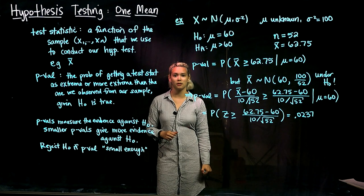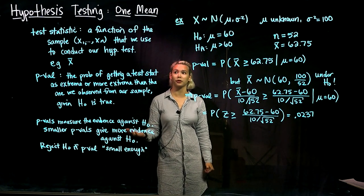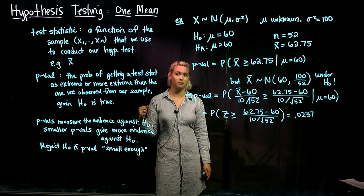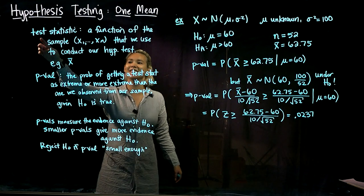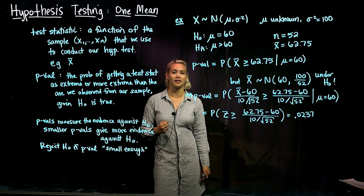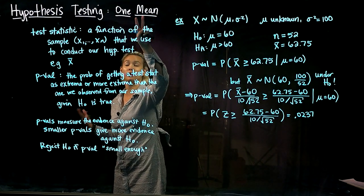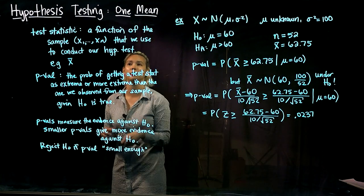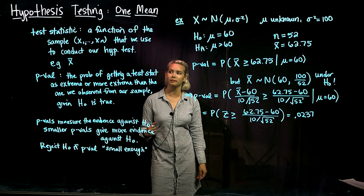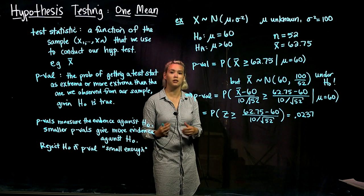First, a couple of definitions. We have the test statistic. A statistic is a number based on a sample, so a test statistic is a function of the sample. Because it's a test statistic, we're going to use that statistic to conduct our hypothesis test. For example, if we're working on hypothesis testing for one population mean, we might use a test statistic of our sample mean.